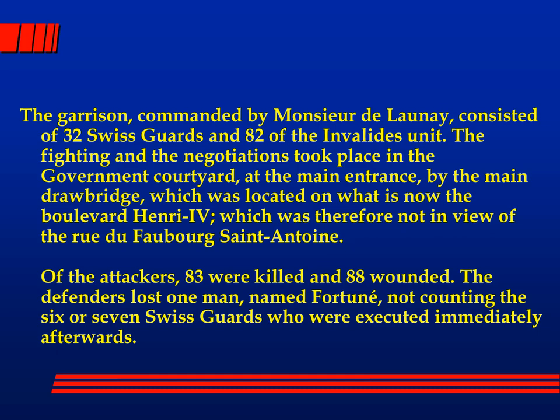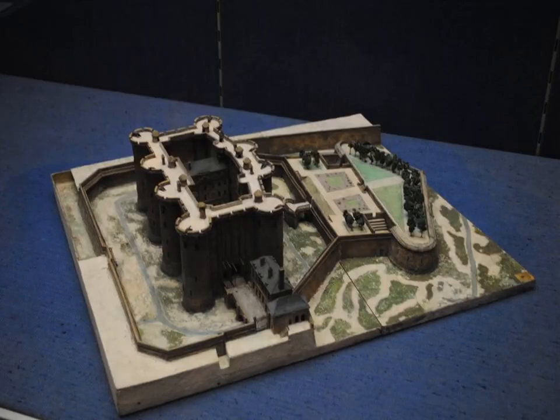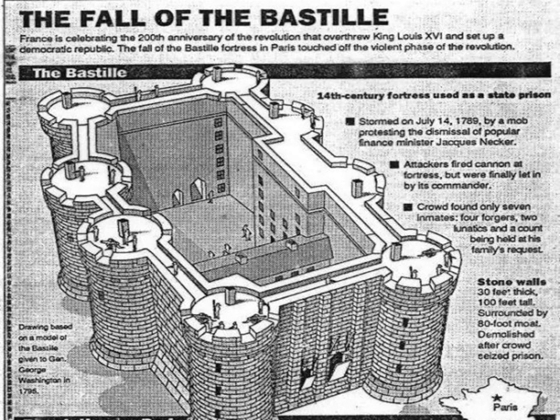The people took over the Bastille on July the 14th. Here's a model of the entire fortification — stone walls 30 feet thick, 100 feet high, surrounded by an 80-foot moat. But how many people were inside when they stormed it? They thought it was full of people — they even thought the Man in the Iron Mask was still there. In the end, they found only seven inmates: four men who were forgers, two lunatics, and one man held at his family's request. They let everybody go and spent a couple of weeks looking for the Man in the Iron Mask — didn't find him.